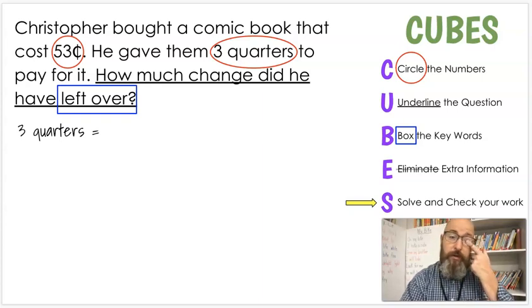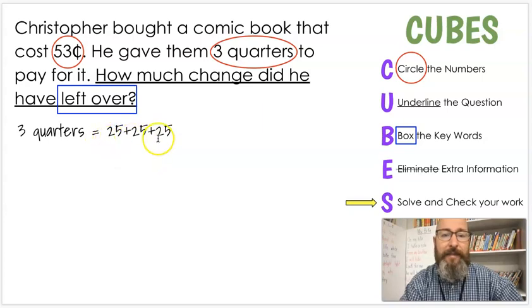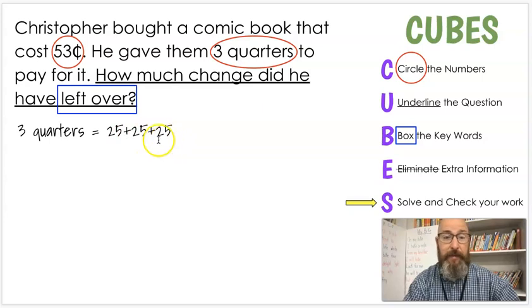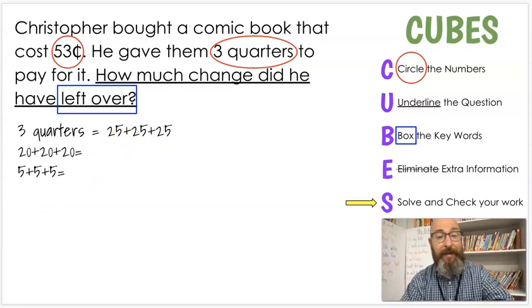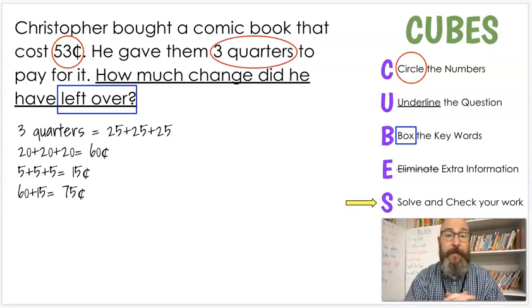So we're going to go to solve and check the work. We know that we have three quarters. And quarters are worth 25 cents each. That might be difficult to do in our head. But if I'm thinking about my 10s and my 5s, I know that if I add 20 plus 20, it's 40 plus 20 is 60. That's just counting 10s. That's 2, 4, 6 tens. So that's 60. And if I add my three 5s, that's 15. So again, 20 plus 20 plus 20, 60. 5 plus 5 plus 5. That's counting by 5s. 5, 10, 15. So 60 plus 15 would be 75. So that's how much he gave them.